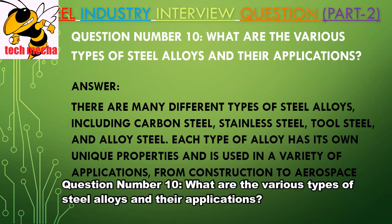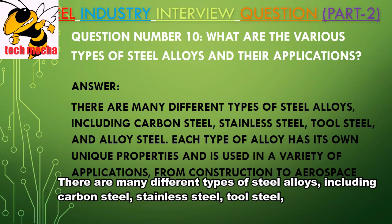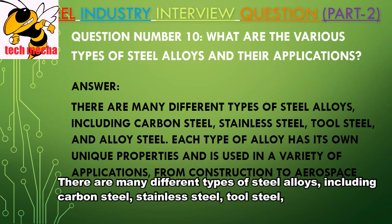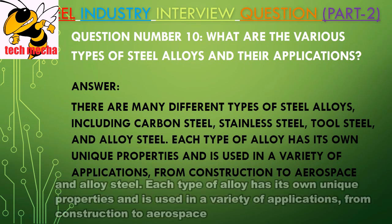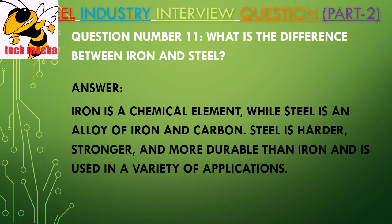Question Number 10: What are the various types of steel alloy and their applications? Answer: There are many different types of steel alloy including carbon steel, stainless steel, and tool steel. Each type of alloy has its own unique properties and is used in a variety of applications, from construction to aerospace.